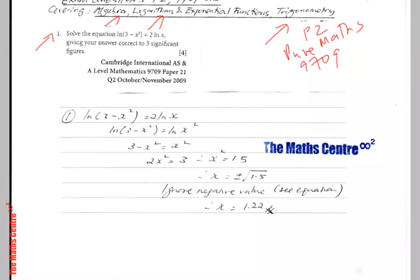Solve the equation: ln(3 - x²) = 2ln(x).